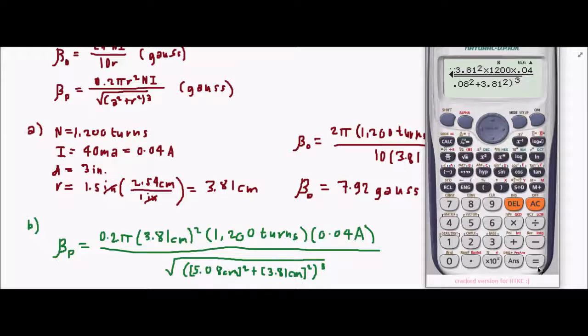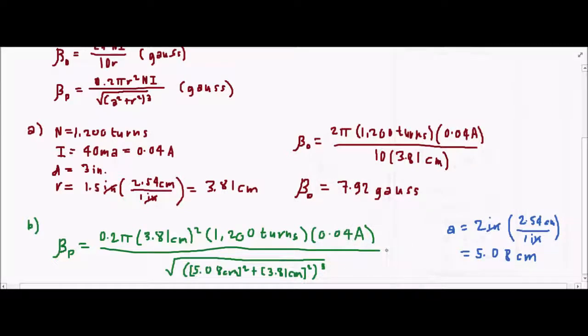So your answer will be 1.71 gauss. This is our answer for part B.